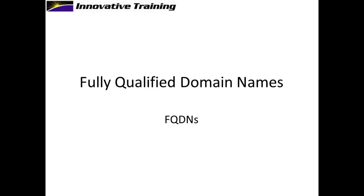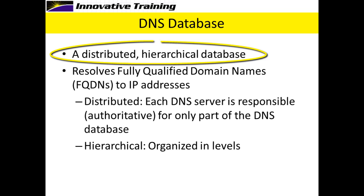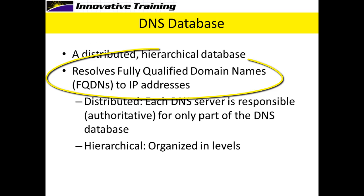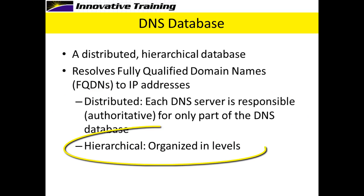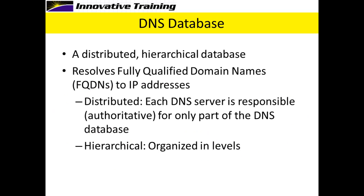Let's talk about Fully Qualified Domain Names, also known as FQDNs. The DNS database is a distributed, hierarchical database. The whole purpose of DNS is to resolve fully qualified domain names to IP addresses. It's distributed — each DNS server is responsible or authoritative for only part of the DNS database. And it's hierarchical, meaning it's organized in levels.